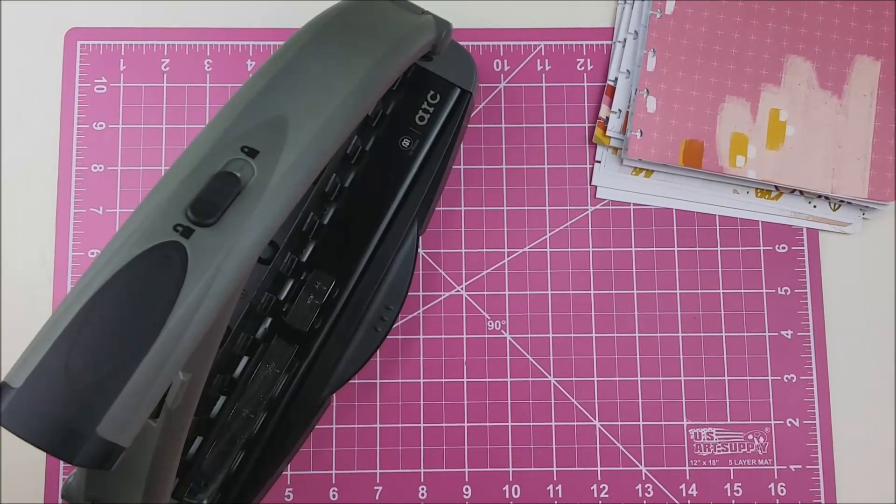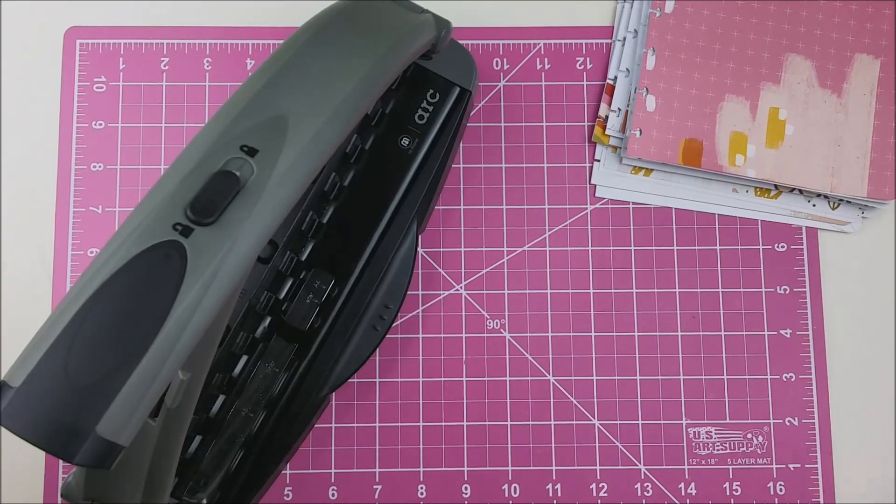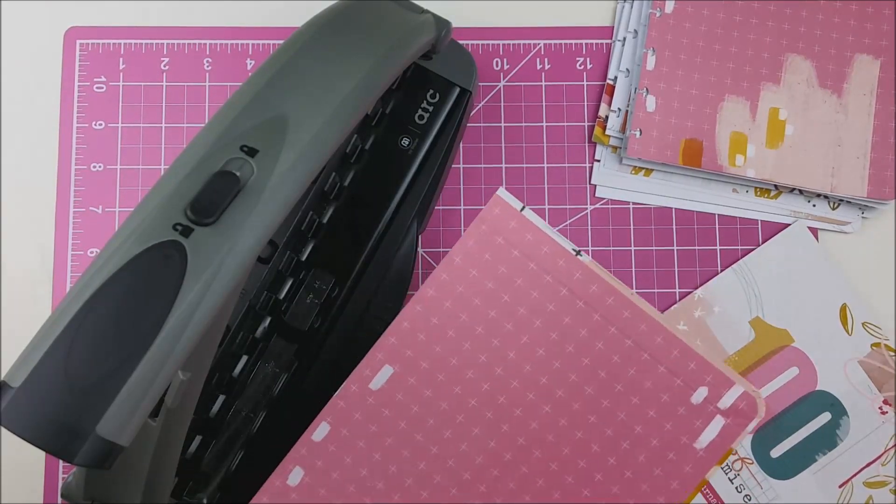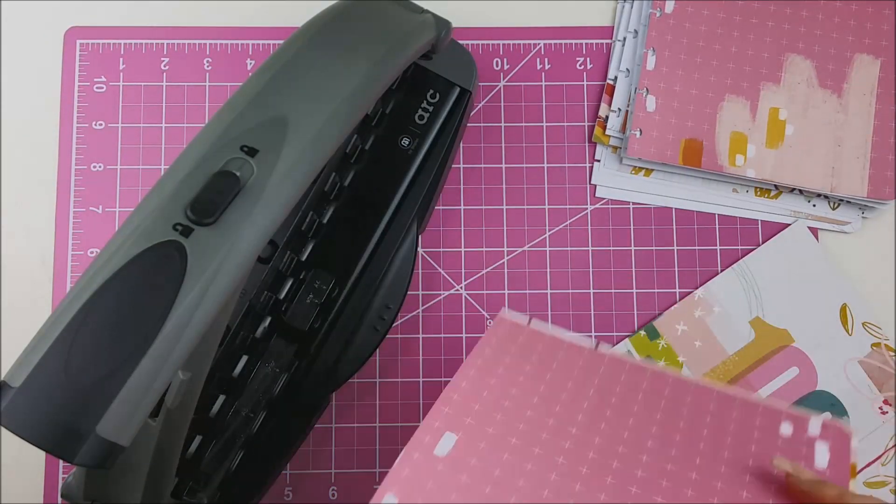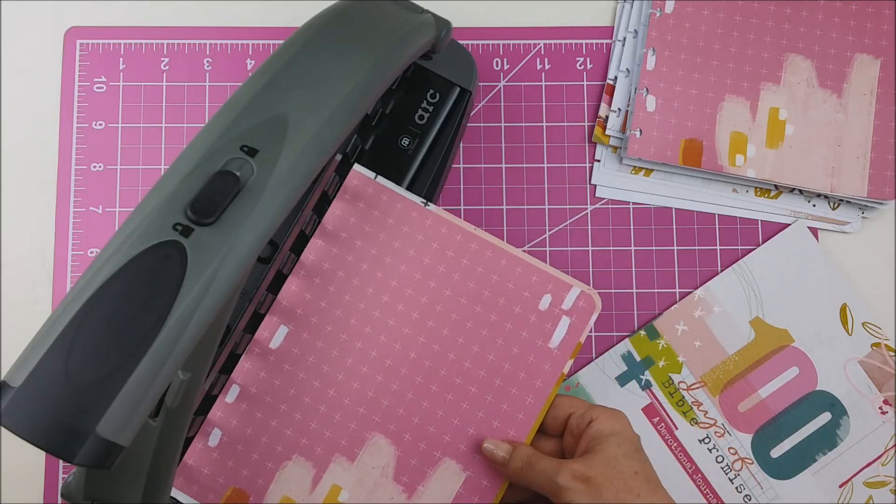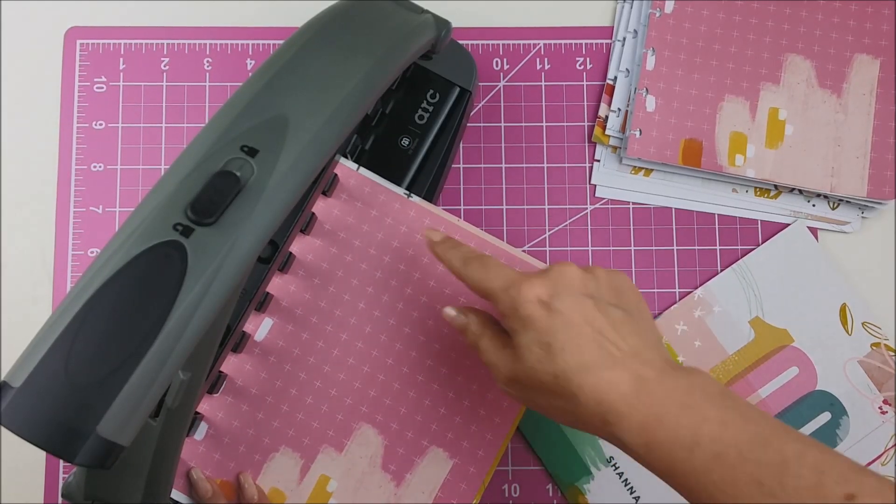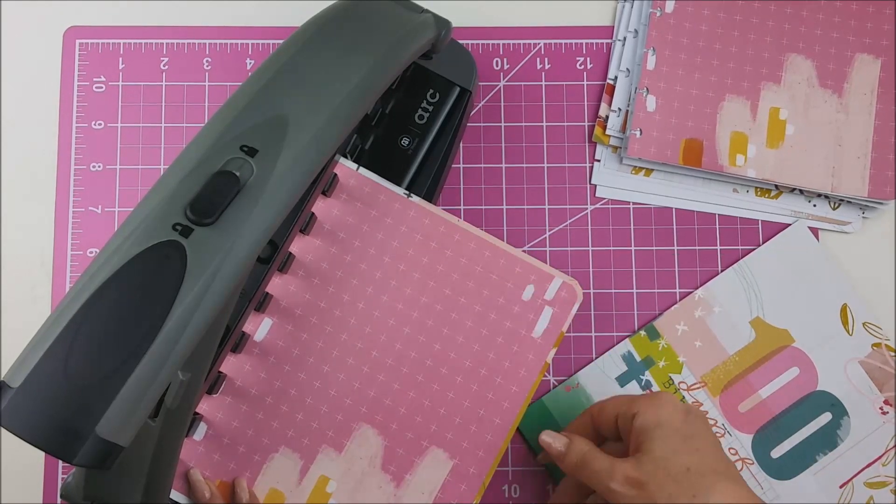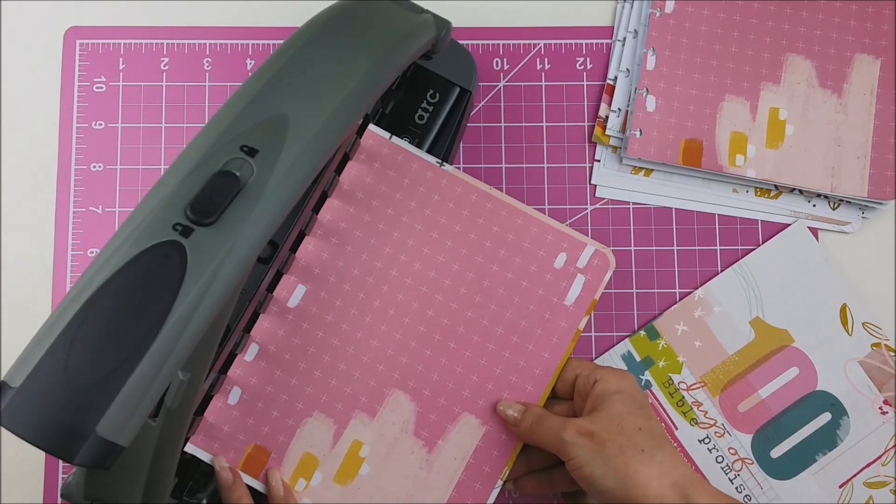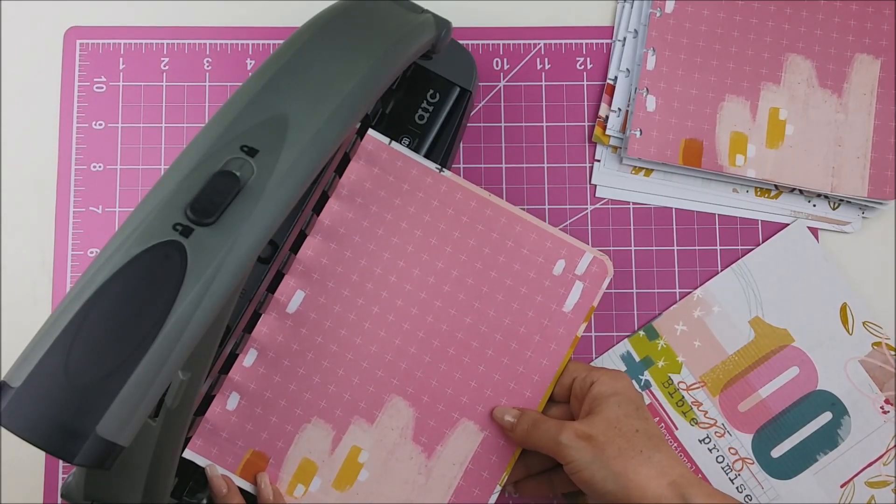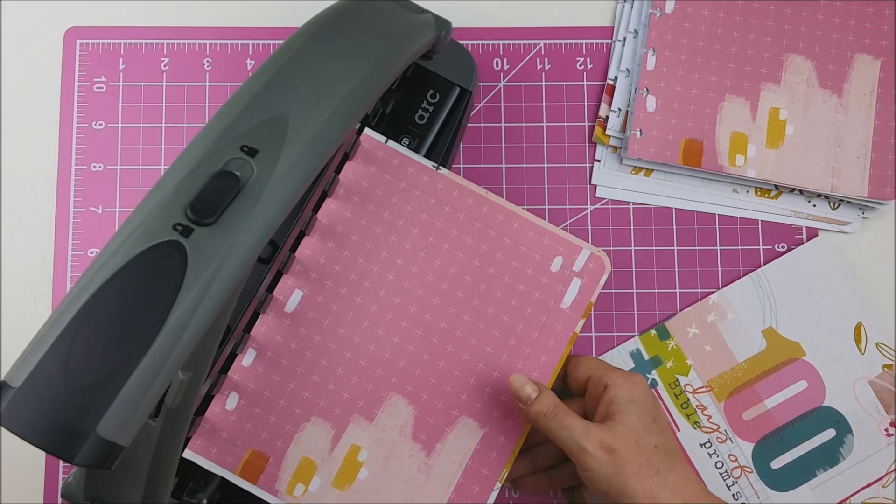Now, what I need to do is my covers. And I want these to be a little different, but I don't want to line it up there because then I'm going to have too much space at the top, right?